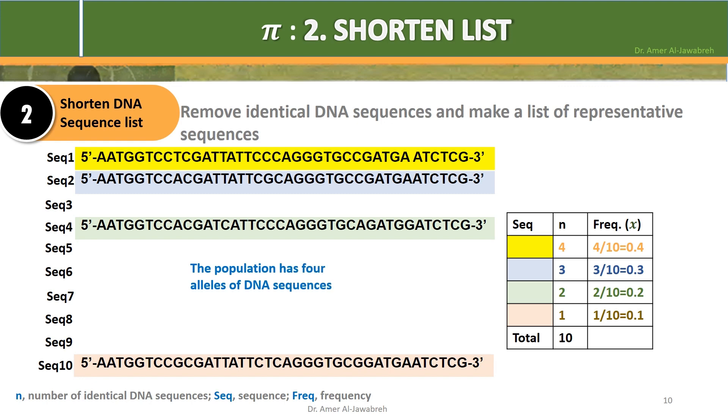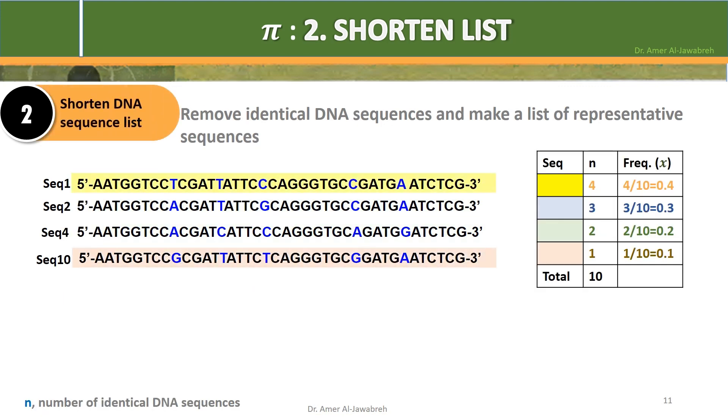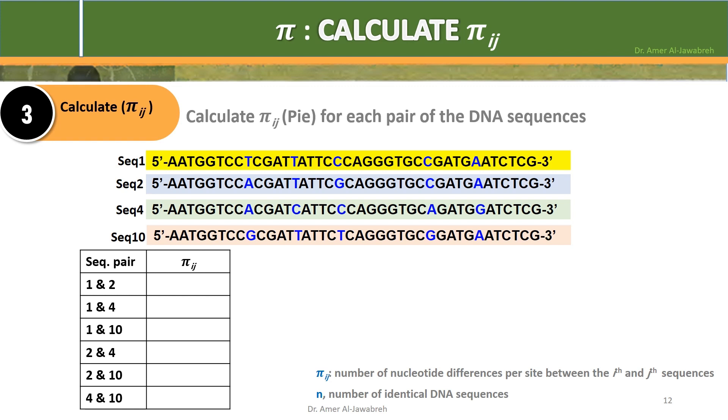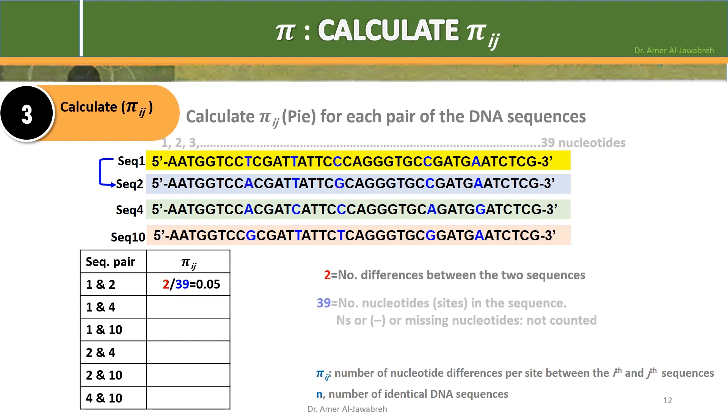The four DNA sequences representing the sample or population. Step 3: Calculate pi i j. Calculate pi i j for each pair of the DNA sequences. Make a table that contains all probable pairs with i the first sequence and j the second sequence: as 1 with 2, 1 with 4, 1 with 10, 2 with 4, 2 with 10, and 4 with 10. 39 is the number of nucleotides or sites in the sequence. Mind that ends or hyphens or missing nucleotides are not counted.